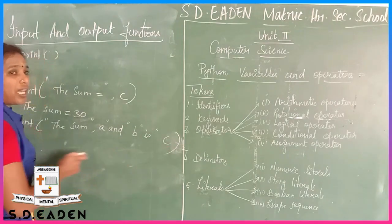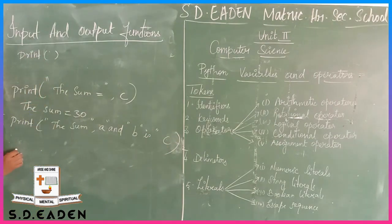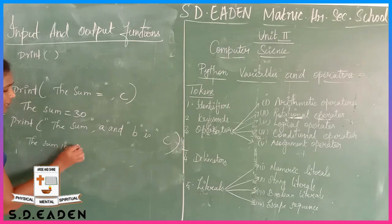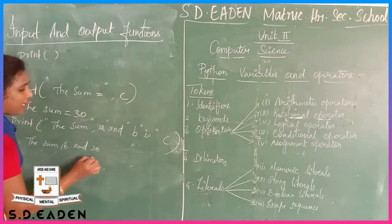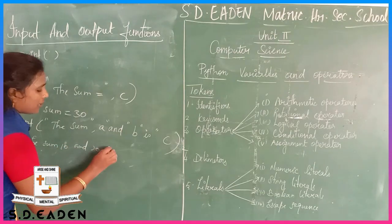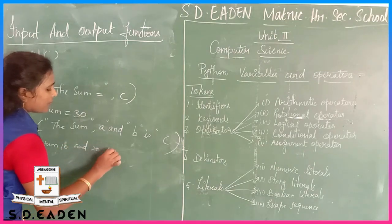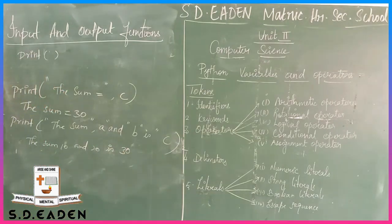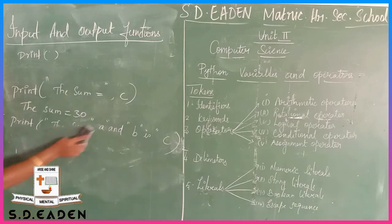So the last concept: you print the value - a is 10, b is 20, so c is 30. This is the display. Okay, this is the print function. Okay, next.